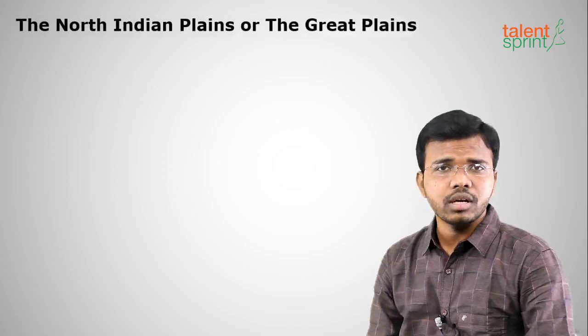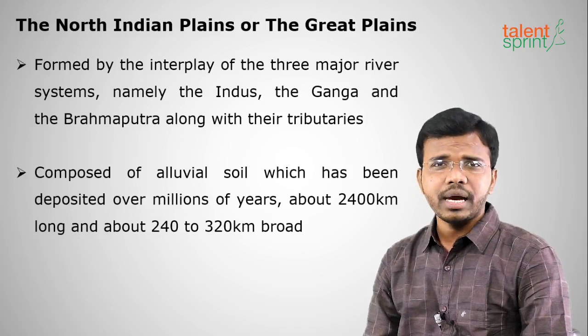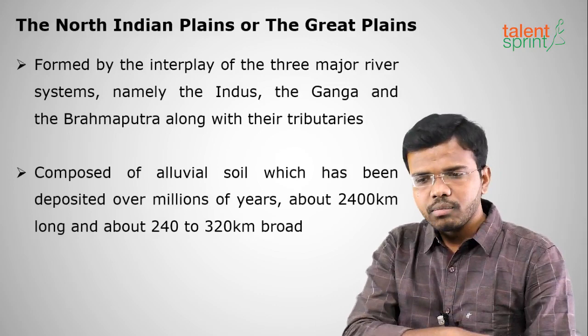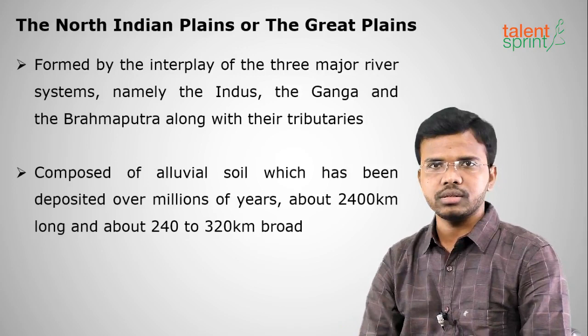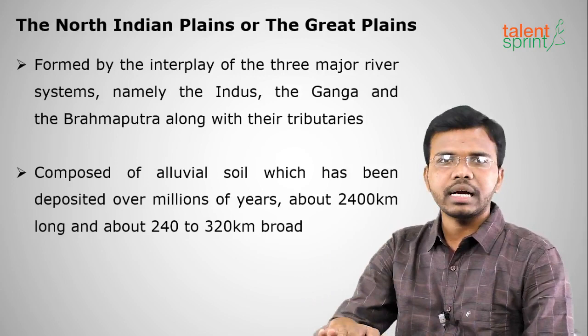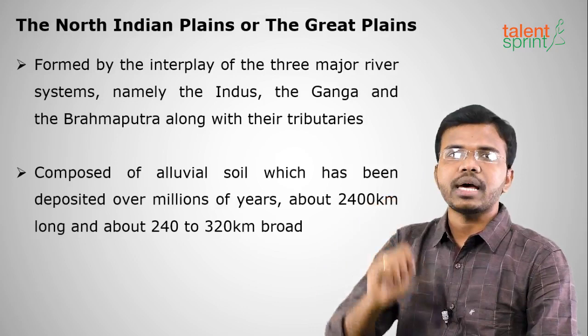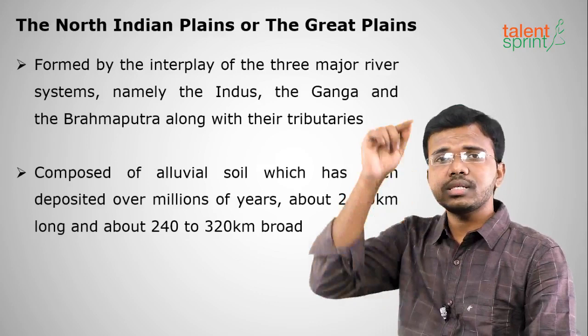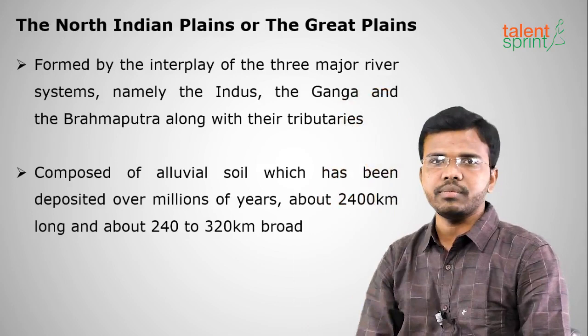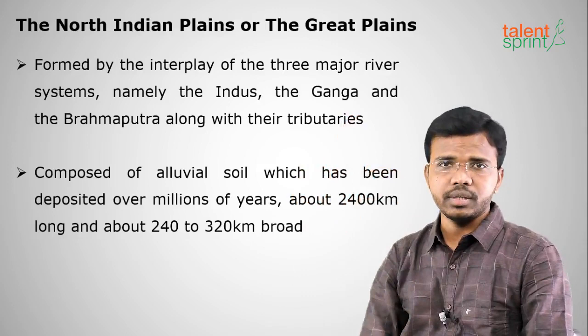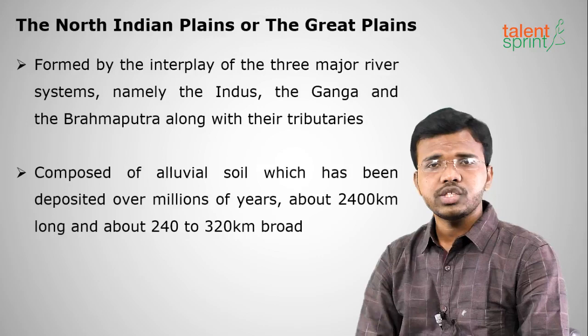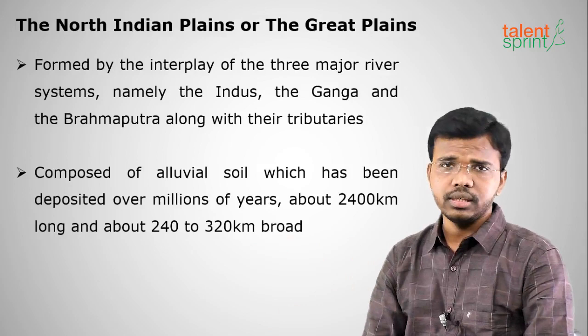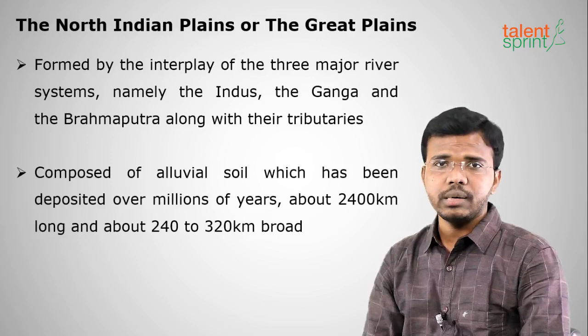The next physiographic division is the North Indian Plains or the Great Plains. To clarify terminology: a plain is normal ground-level flat land suitable for agriculture; a plateau is elevated flat land; a mountain has a sharp summit at the top; and a hill has a rugged, non-sharp summit. A hill range is a group of two or more hills, such as the Nallamalla or Sheshachalam hill ranges.